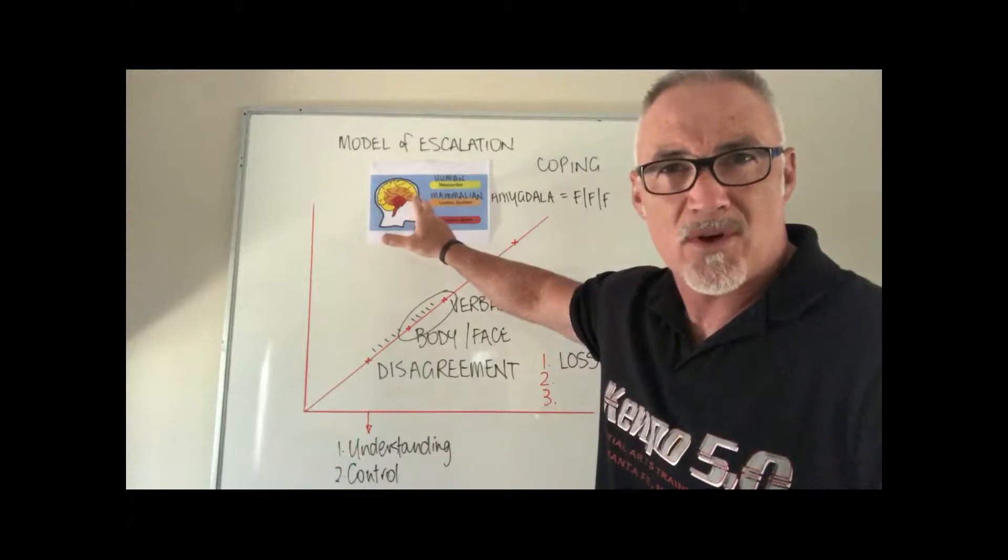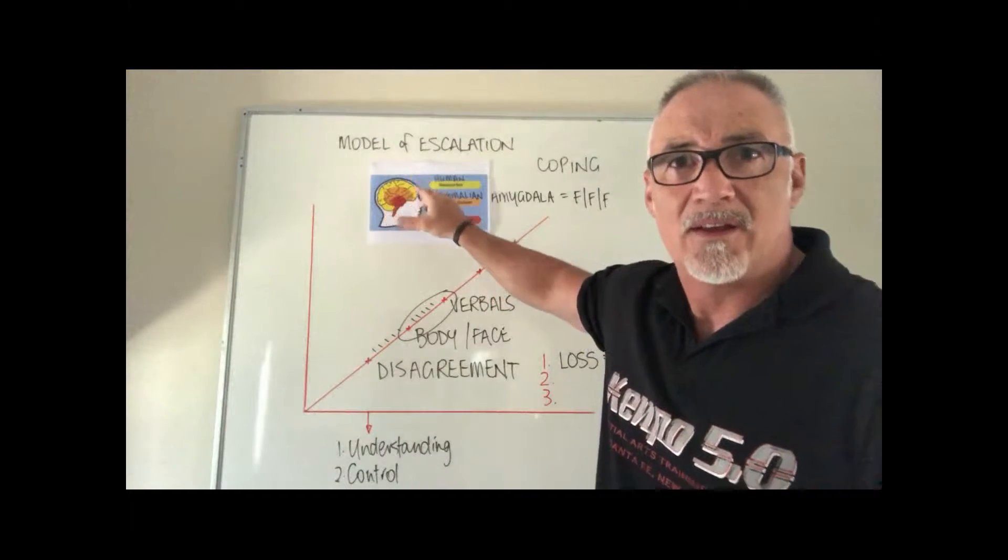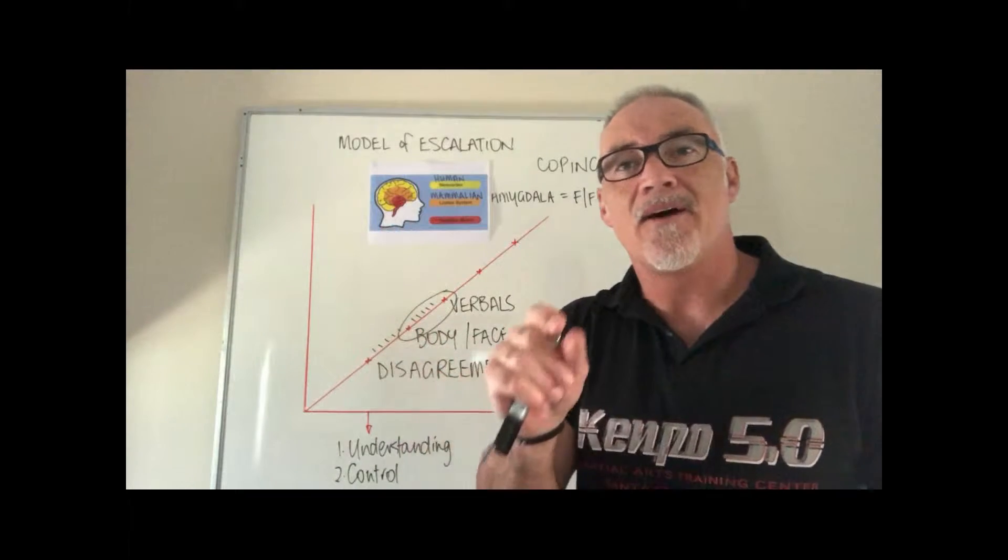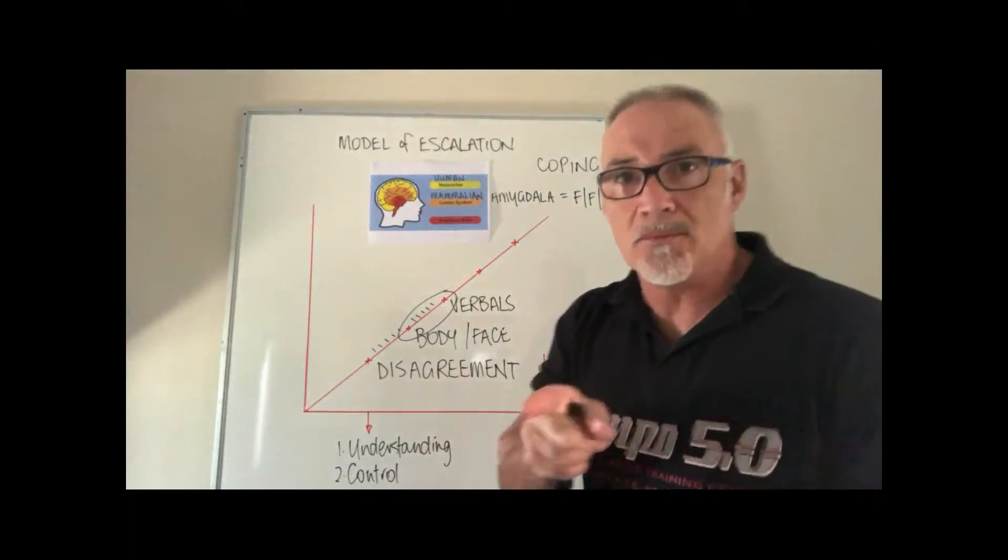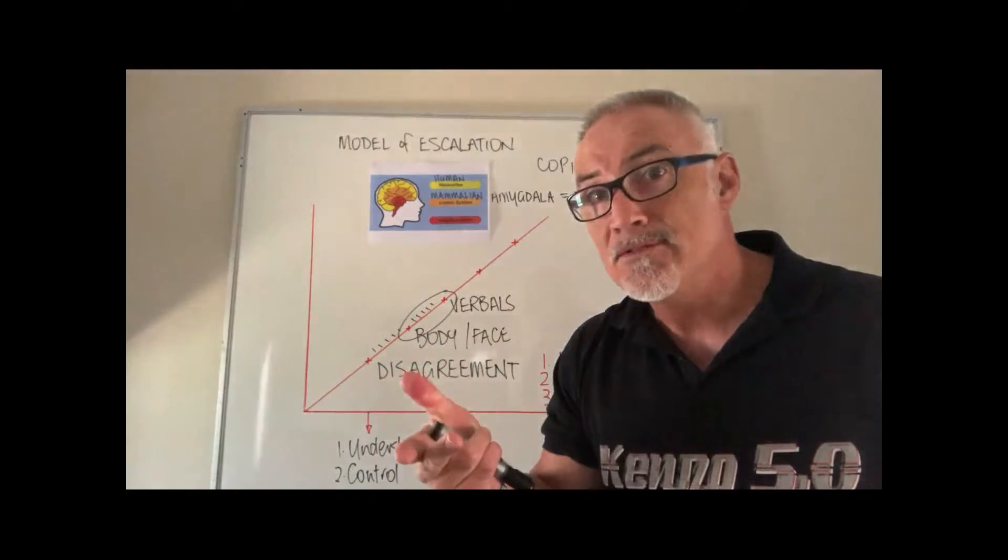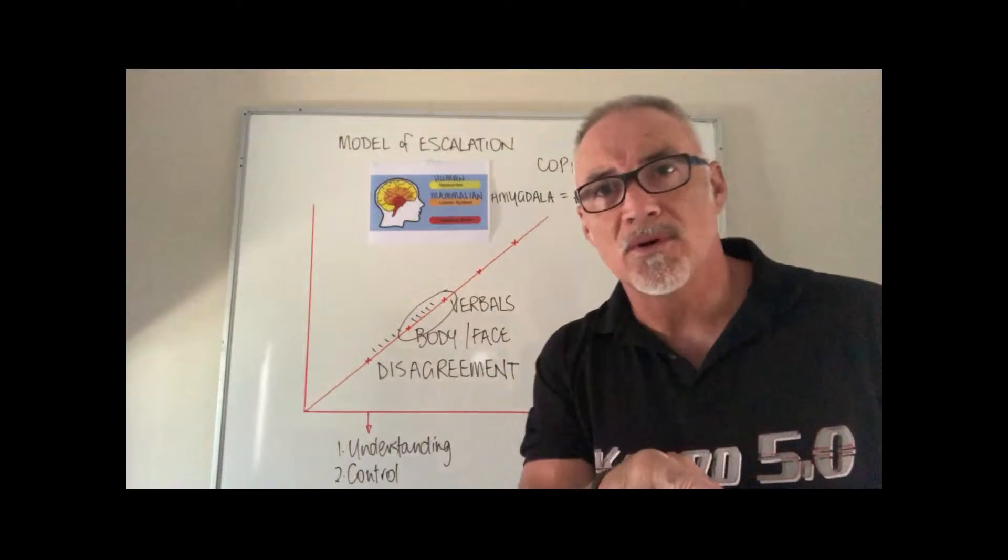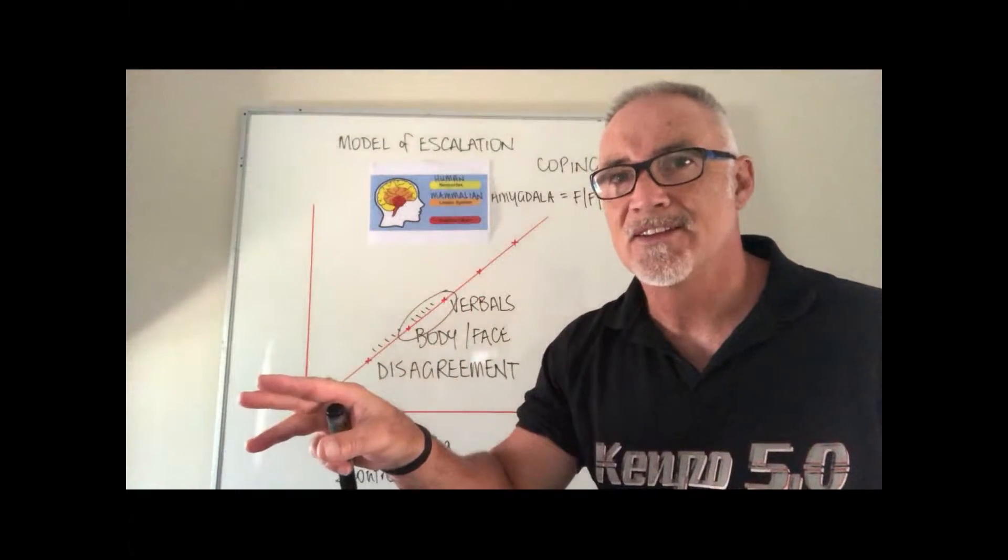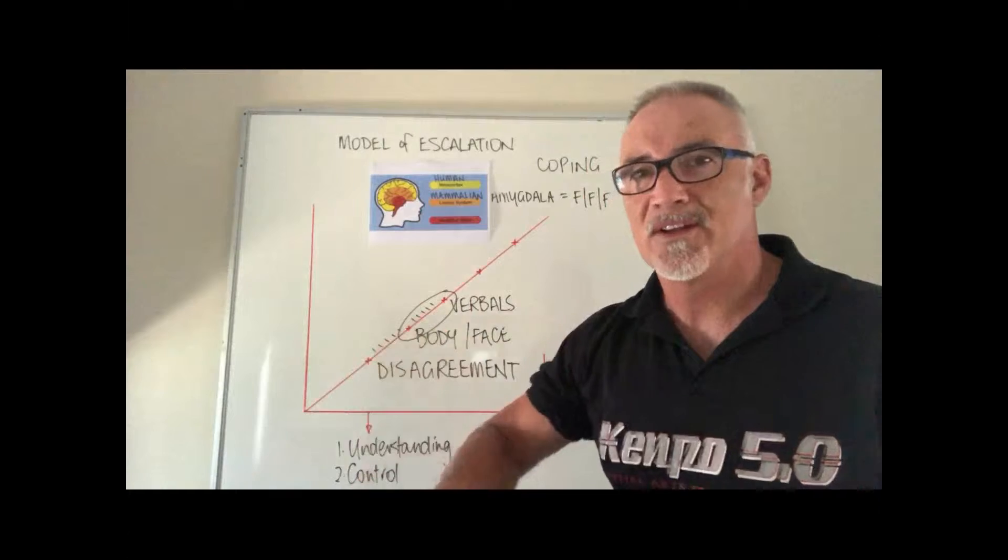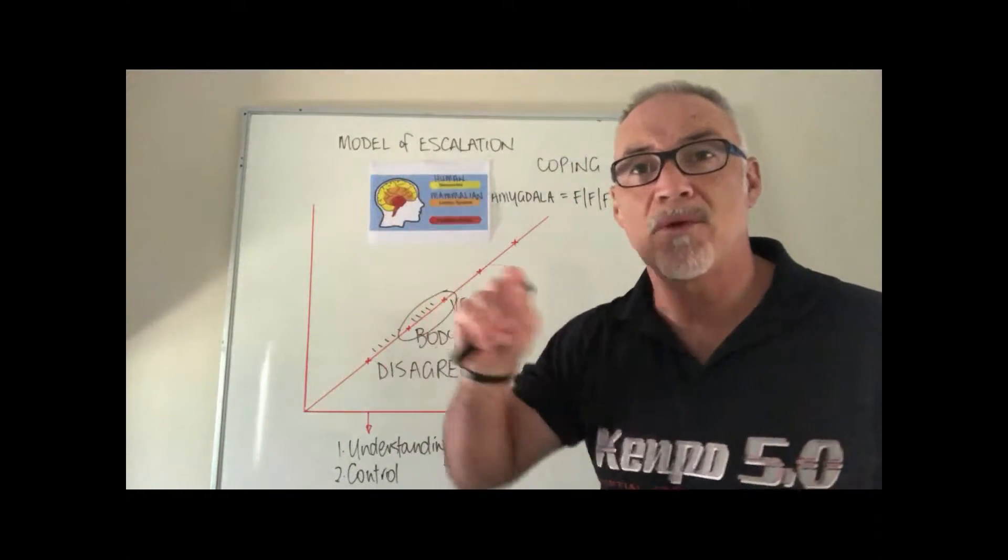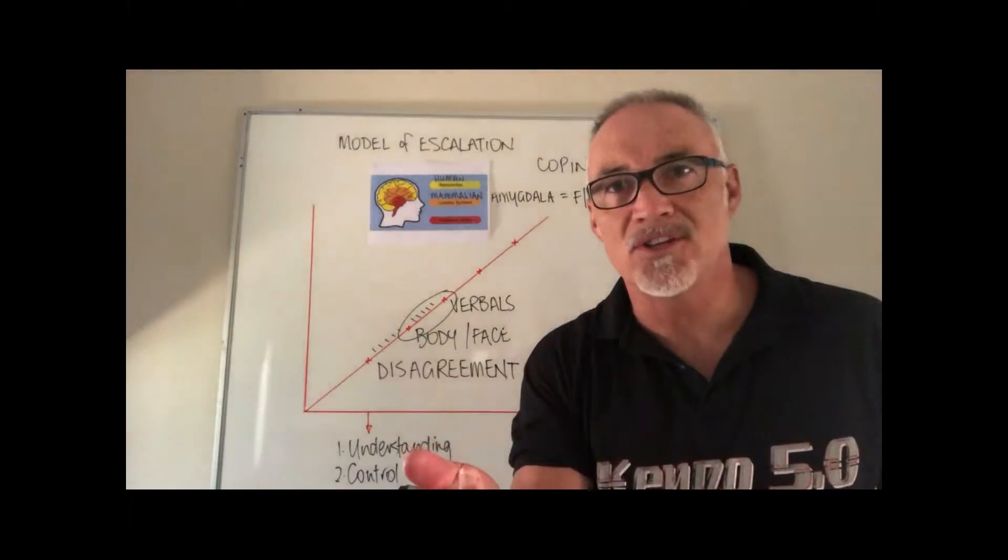So forget the gorilla and talk to the limbic system. Don't worry about trying to placate a gorilla, talk to the fragile emotional brain. Now if you were talking to a German tourist what language would you use? German. If you're talking to a Chinese tourist what language would you use? Chinese. If you're talking to an emotional brain what language do you use? The language of emotion.